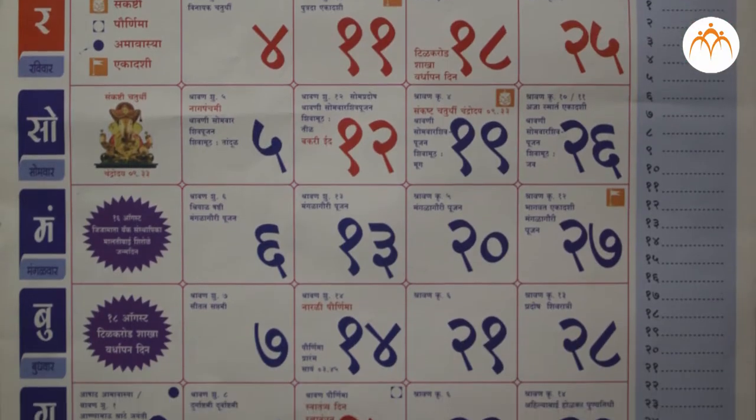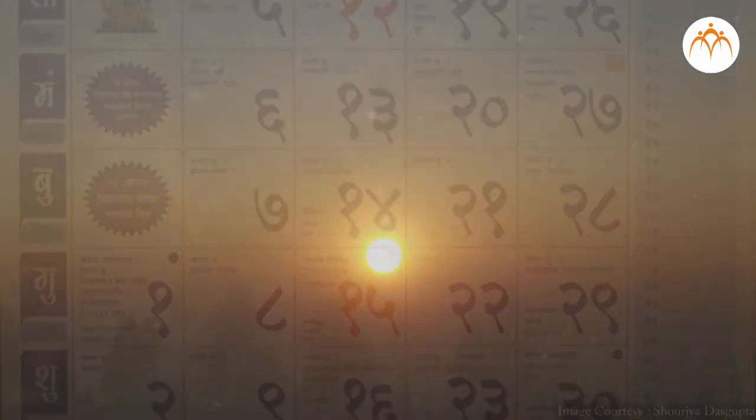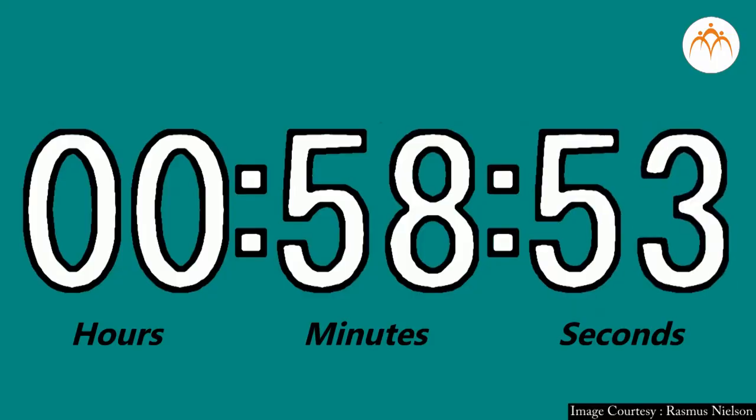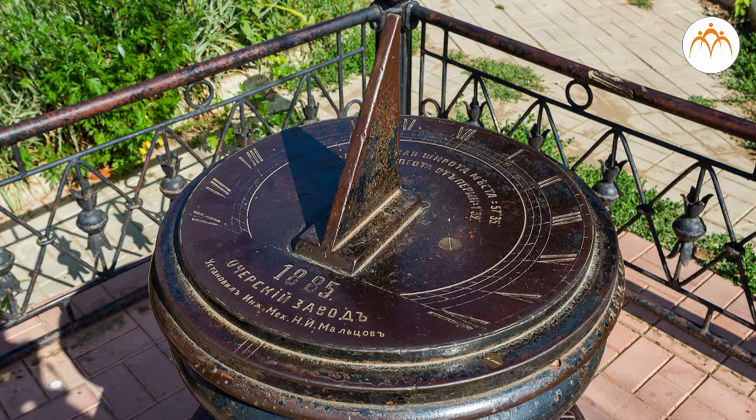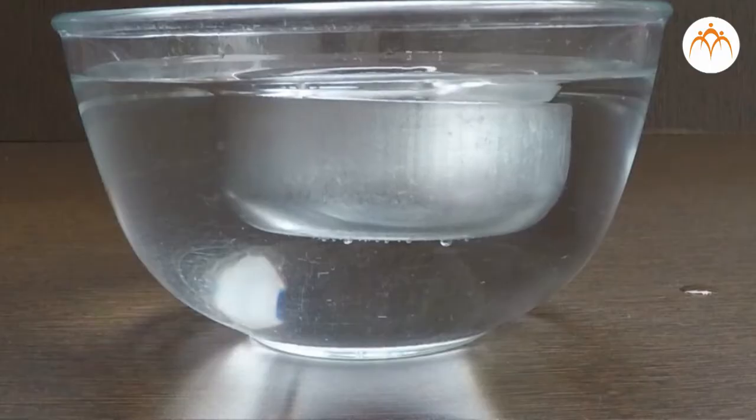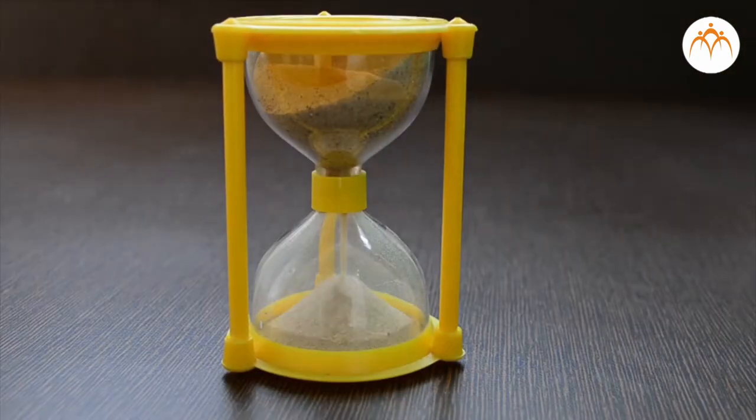Though days, months and years could be measured with sun, stars and galaxies, hours, minutes and seconds were hard to measure accurately. People relied on sundials, water clocks and sand for time measurements.